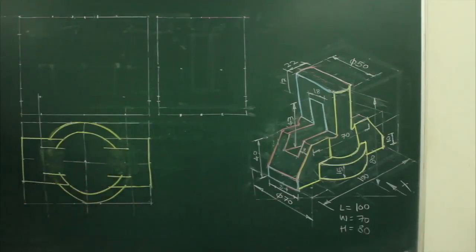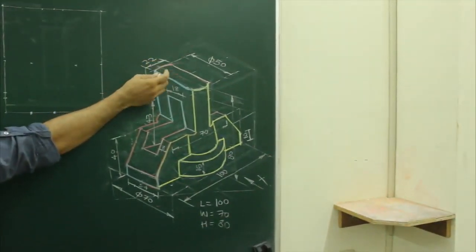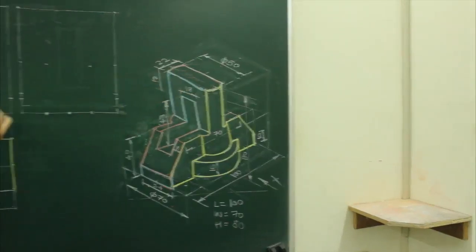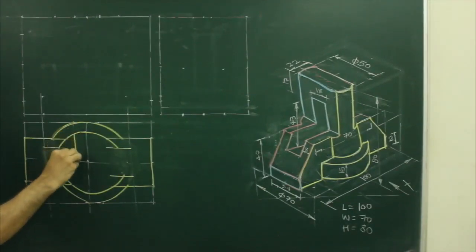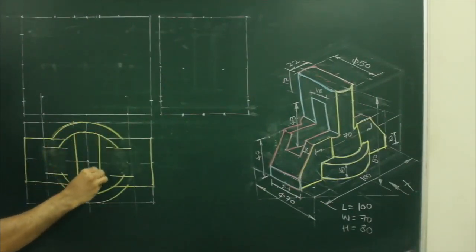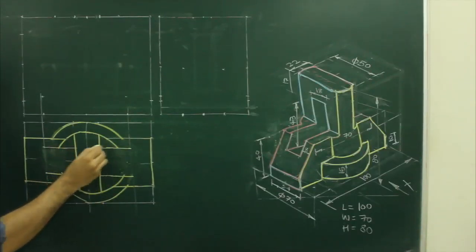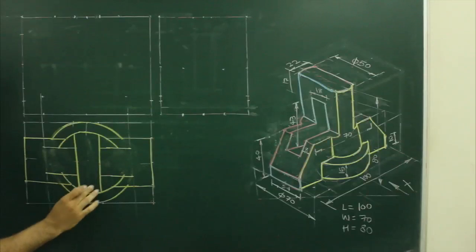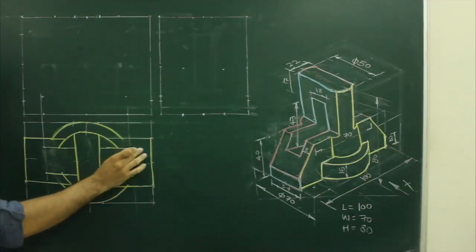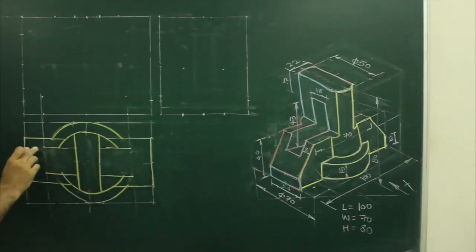We have been given a dimension of 22, so from the center we will take 11 each side. We can extend this length, and we are done with this much. Now for the remaining length we need to draw the front view first, and then we can get this length.